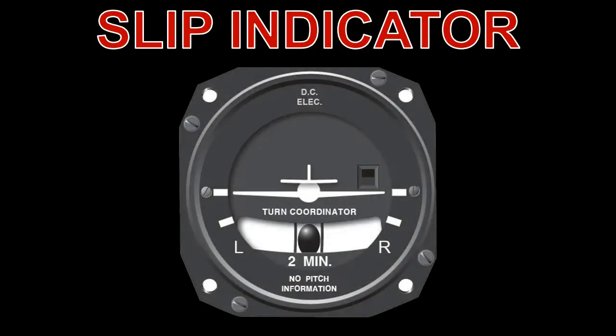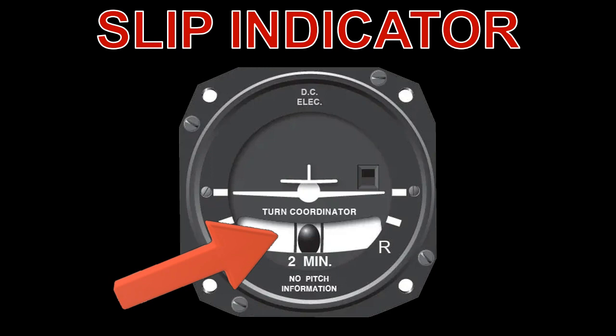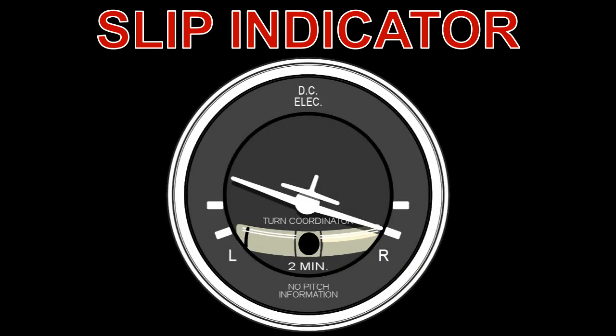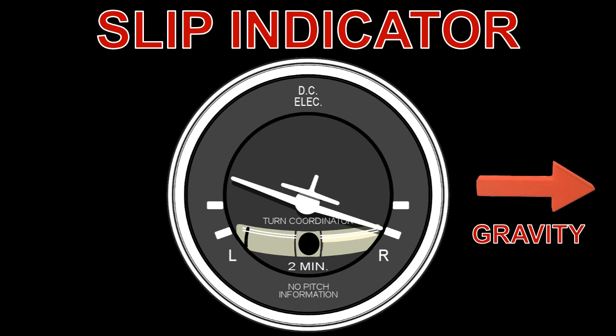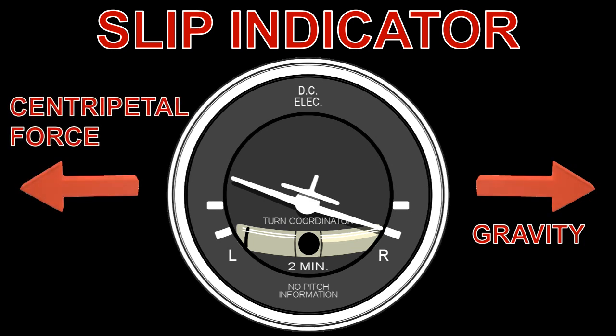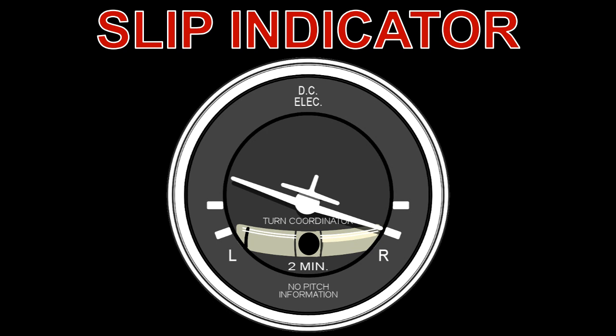Next, we look at the slip indicator. This is the part of the instrument that looks like a curved spirit level. The device is technically called an inclinometer, which basically contains a ball sealed inside a curved glass tube, which also contains a liquid to act as a damping medium. The ball gives an indication of whether the aircraft is slipping, skidding, or in coordinated flight. The ball's movement is caused by the force of gravity and the aircraft's centripetal acceleration. When the ball is centered in the middle of the tube, the aircraft is said to be in coordinated flight.